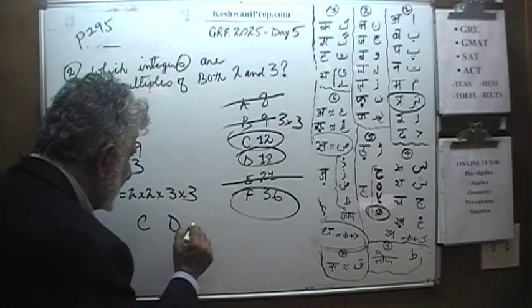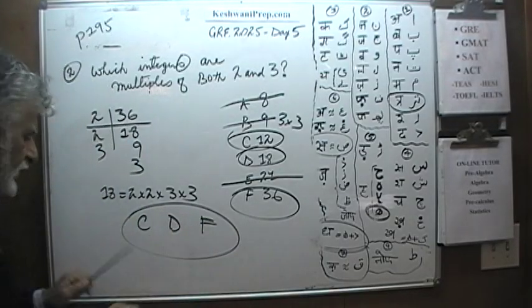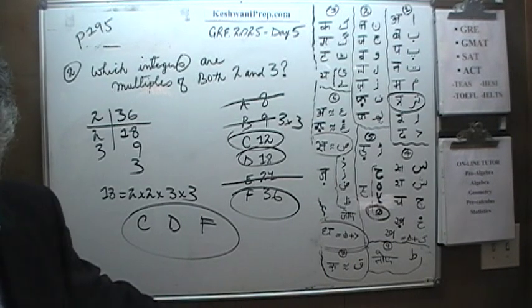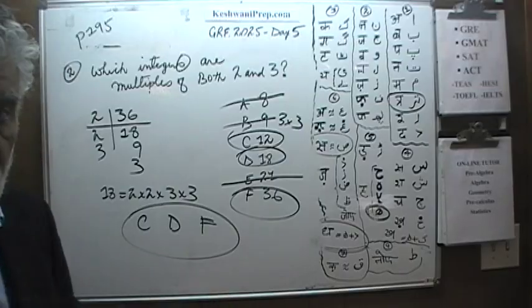The answers are C, D and F. Make sure you mark all 3 of them. Otherwise, if you mark just 2 out of 3, you will not get 2 third credit. You will get no credit.